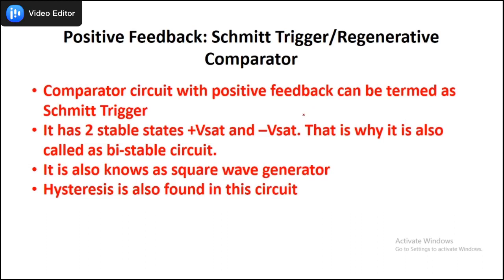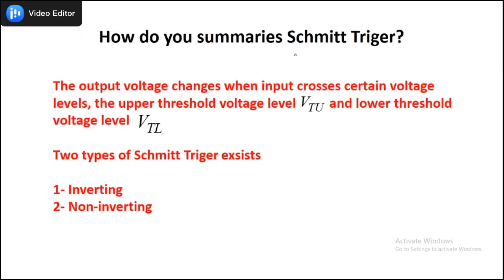The Schmitt trigger has two stable states — plus V saturation and minus V saturation. This is why it is also known as a bistable circuit, and it is also known as a square wave generator. Hysteresis is also found in this circuit — the same hysteresis you studied in the measurement subject in your third semester.